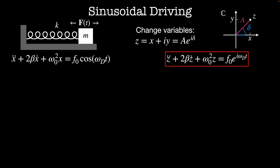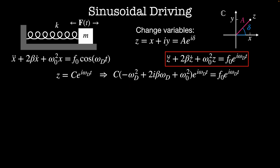The inhomogeneous portion of this equation is f naught e to the i omega_d t. It makes sense that our particular solution will involve e to the i omega_d t as well, since the derivative of the exponential is that exponential, so we might be able to divide out by that term. Let's try the particular solution z equals c e to the i omega_d t. Plugging that in, we get c times minus omega_d squared plus 2i beta omega_d plus omega naught squared times e to the i omega_d t equals f naught e to the i omega_d t. All time-dependent terms cancel out, and we can solve for c in terms of f naught, omega_d, beta, and omega naught.